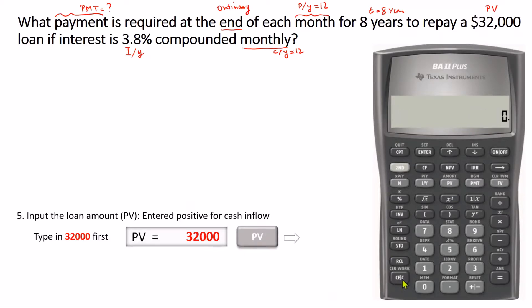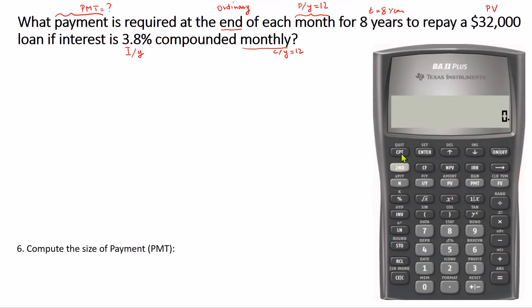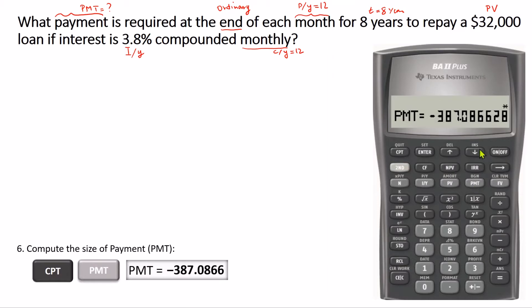We clear, and it's time to compute the size of payment. To do that, we press CPT and then press the PMT key. As you see here, PMT is calculated as a negative number or as cash outflow, which is the case when a loan is repaid—the payments are considered cash outflow.